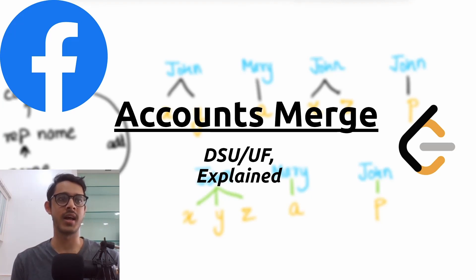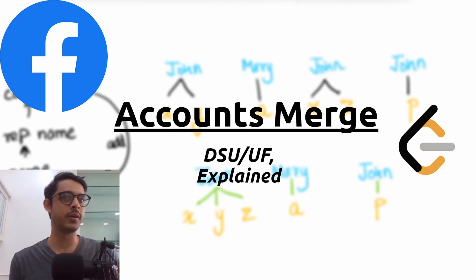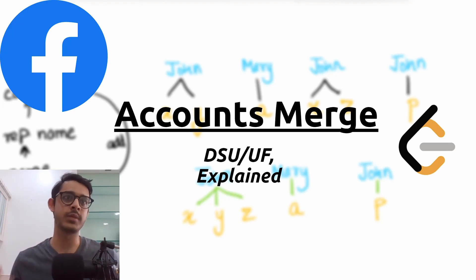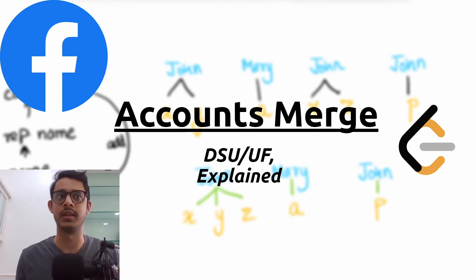Hello everybody and welcome back. I'm going to talk about the problem 'Accounts Merge', and more specifically we're going to explore the DSU or the Union Find approach in detail. I'm also going to explain the intuitions I used to get to the solution, as well as how to implement that in Python 3. Let's get started.